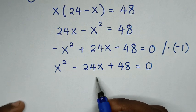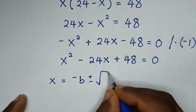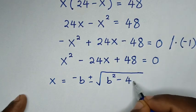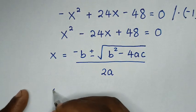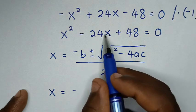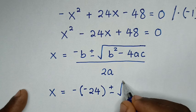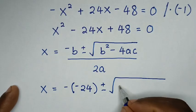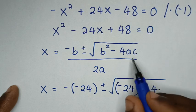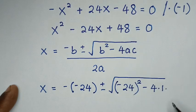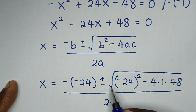Now to find the values of x: x is equal to negative b plus or minus square root of b squared minus 4ac, over 2a. So it will be x is equal to negative b — b is the coefficient of x which is negative 24 — plus or minus square root of b squared, which is (negative 24) squared, then minus 4 times a, it is 1, times c is 48, over 2 times a, it is 1.